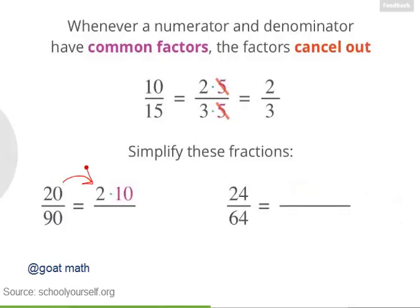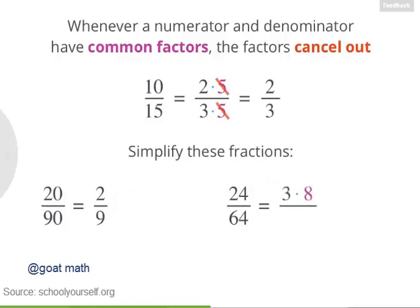Excellent! So 20 equals 2 times 10, while 90 equals 9 times 10. The tens cancel, so 20 ninetieths equals 2 ninths. Over here, 24 equals 3 times 8, while 64 equals 8 times 8. We can cancel this 8 in the numerator with one of the 8s in the denominator, so 24 sixty-fourths equals 3 eighths.